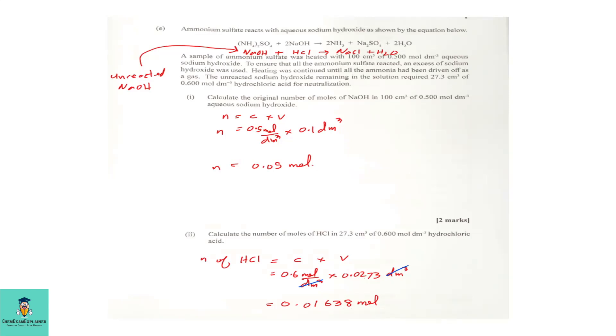Before I move on, let's look at what is going on here with these two equations. Now notice you are given only one equation. But to truly understand what's happening here, you must understand the other equation. So the ammonium sulfate reacted with excess sodium hydroxide so that all of the ammonium sulfate will be used up with the excess sodium hydroxide. So what will be left would be unreacted sodium hydroxide. That unreacted sodium hydroxide will then be titrated with a known concentration of hydrochloric acid.